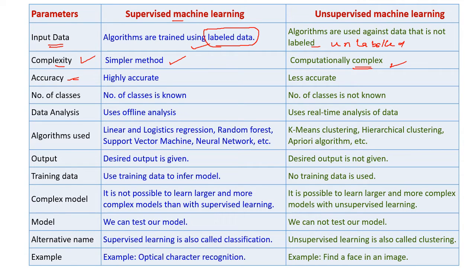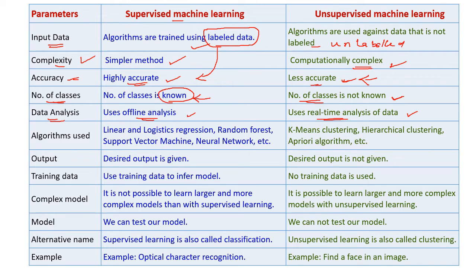When we come to accuracy, supervised learning gives highly accurate results because we are using labeled data. In unsupervised learning, the accuracy is very less because there is no training for the algorithm. When we come to number of classes, in supervised learning, the number of classes is already known — predefined classes are used. In unsupervised learning, there are no such classes; the number of classes is unknown. For data analysis, supervised learning uses offline analysis, while unsupervised learning uses real-time data analysis.